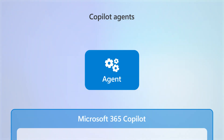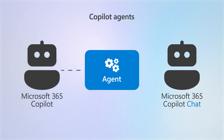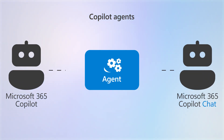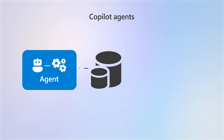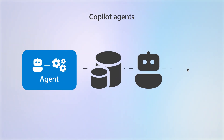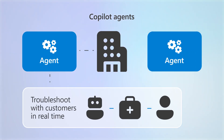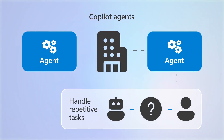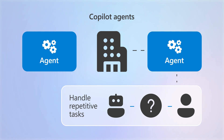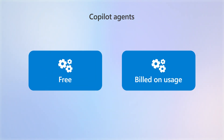Finally, Co-Pilot Agents are available in both Microsoft 365 Co-Pilot and Co-Pilot Chat. These AI-driven agents can be created and used to connect to your organization's data to automate and execute business processes. With them, you can troubleshoot with customers in real time or let it handle repetitive tasks like answering commonly asked HR questions. There are agents that are free and agents that are billed based on usage.